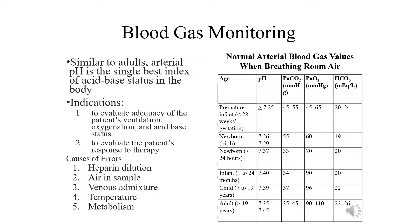Blood gas monitoring is similar to adults, where the arterial pH is the single best index of acid-base status in the body. Indications for blood gas monitoring include to assess the patient's ventilation and oxygenation, as well as their acid-base status, and to evaluate the patient's response to therapy.